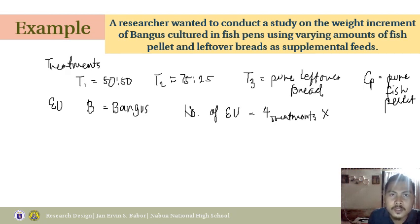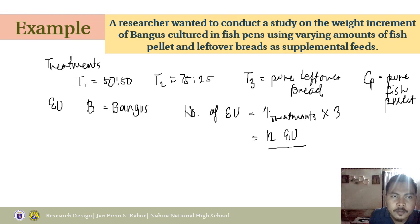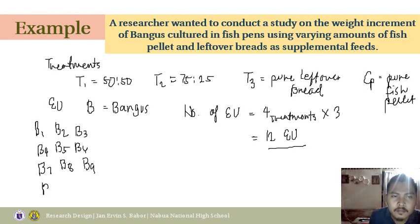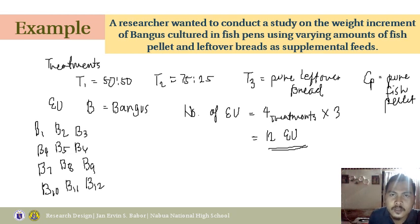In this case, according to the basic principle of research design, 3 is the minimum number of replicates. So 4 treatments multiplied by 3 replicates — you will need 12 EUs. You will number bangus B1, B2, B3, B4, B5, B6, B7, B8, B9, B10, B11, up to B12. You have 12 experimental units. Then, to follow the last principle, you will assign your EU randomly to each treatment.